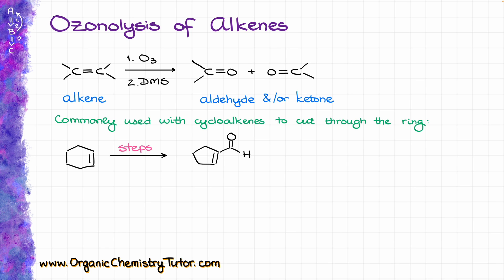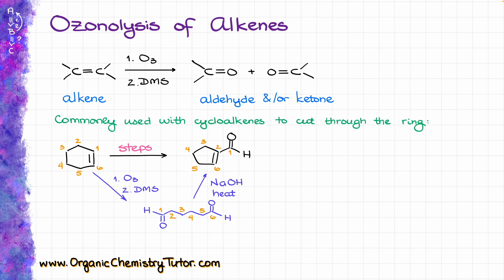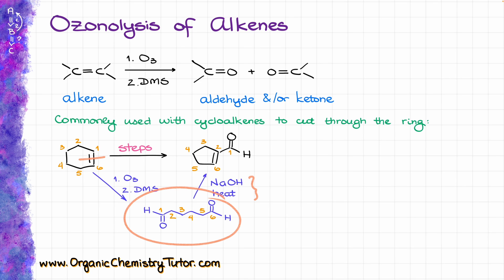One of my personal favorites that I've seen many times on tests and included in my own tests when I was an instructor is the synthesis where we start with cyclohexene and end up with cyclopentane with some functional groups on it. The key step in this reaction is actually going to be the ozonolysis to cut through the double bond, form the corresponding dialdehyde, and then go through the aldol condensation to re-close the ring, but now making a five-membered ring instead.